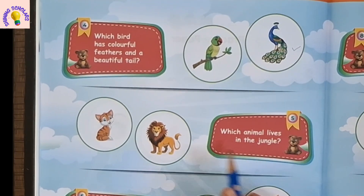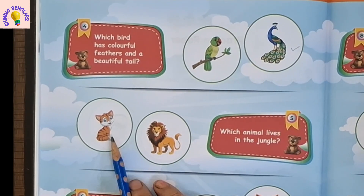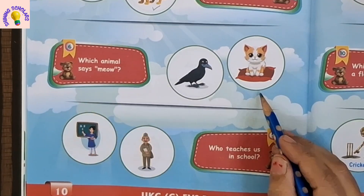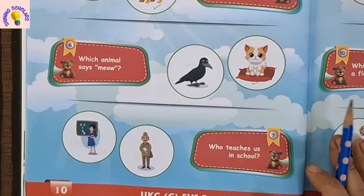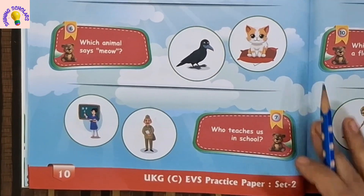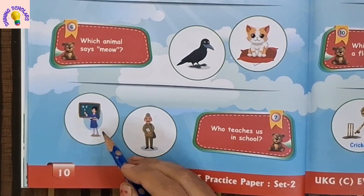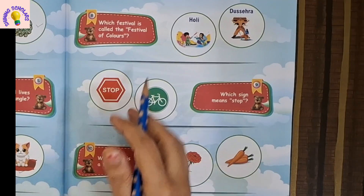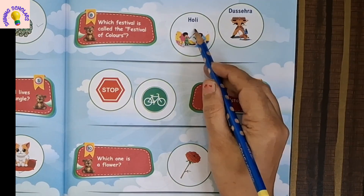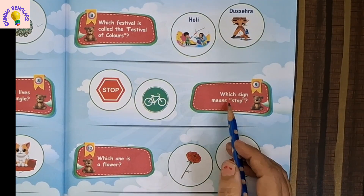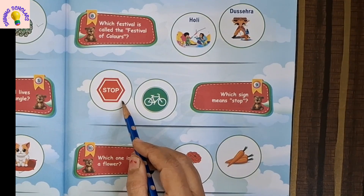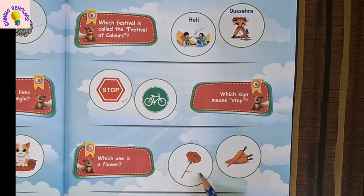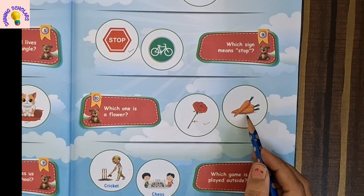Which animal lives in the jungle — lion or cat? Lion. Which animal says meow — cat or crow? Cat. Who teaches us in school — teacher or postman? Teacher. Next question: which festival is called the festival of colors — Holi or Dussehra? Holi. Which sign means stop? This is the stop sign. Which one is a flower? This is a flower, and these are carrots.